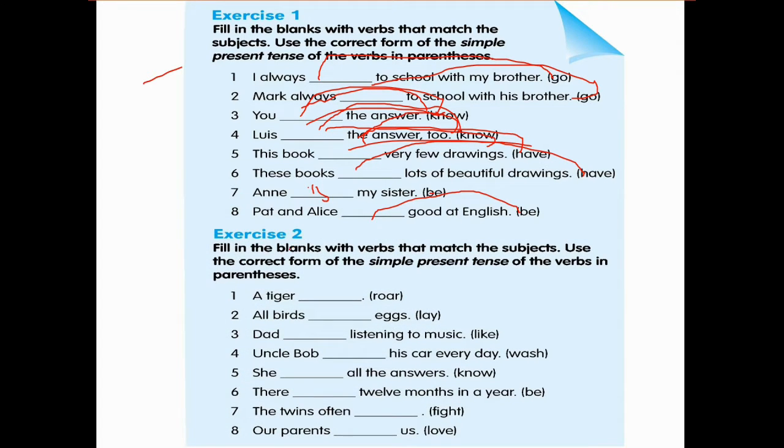Now second exercise. Fill in the blanks with verbs that match the subjects. And use the correct form of the simple present tense of the verbs in the parenthesis. A tiger is roaring.